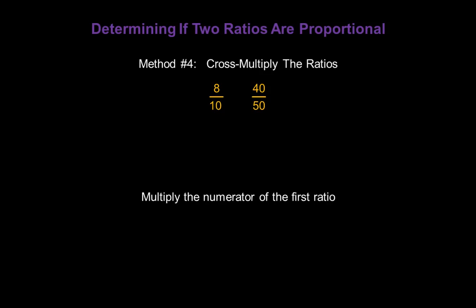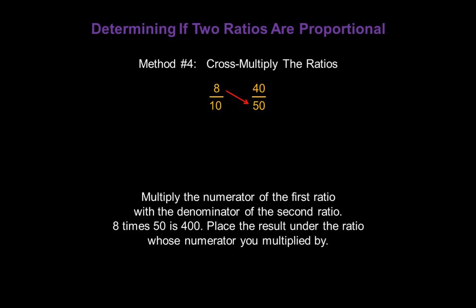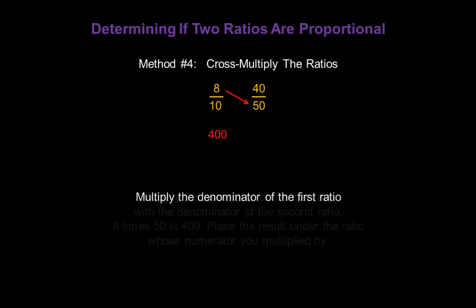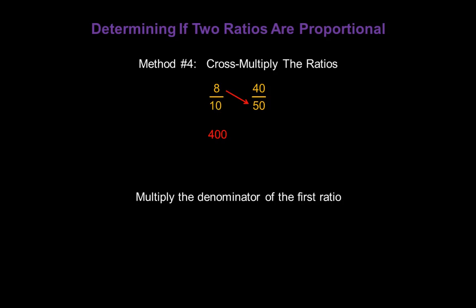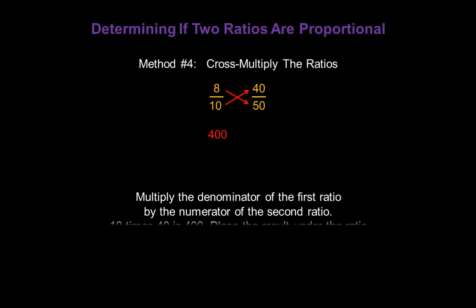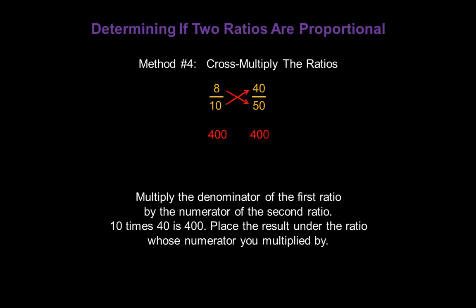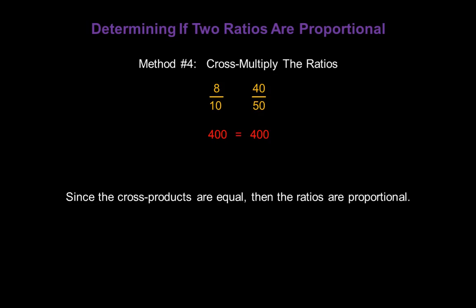We start by multiplying the numerator of the first ratio, which is 8, with the denominator of the second ratio, which is 50. 8 times 50 is 400, and we place that result under the first ratio, 8 over 10. Now multiply the denominator of the first ratio, 10, with the numerator of the second ratio, 40. 10 times 40 is 400, and that result goes underneath the other ratio. Since the cross products are equal — 400 equals 400 — the original ratios are proportional.